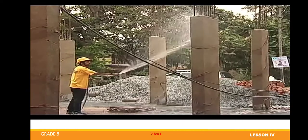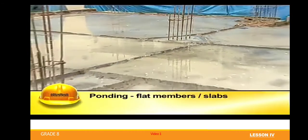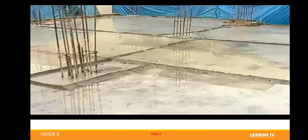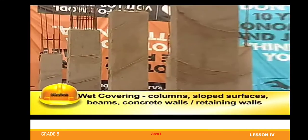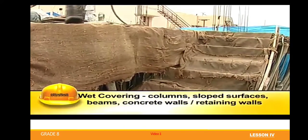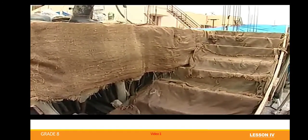The method of curing depends on the type of member. Ponding is used for flat members like slabs — it is done by impounding water to a depth of around 50 mm. The slab is divided by constructing small bunds with lean mortar or mud, which are filled with water and replenished at frequent intervals. Wet covering is generally used for columns, sloped surfaces, beams, and concrete walls, where surfaces are covered with wet jute bags, burlaps, straw, etc. Water is sprinkled on these coverings at regular intervals to ensure continuous wetness.